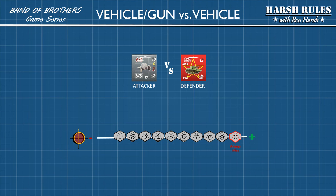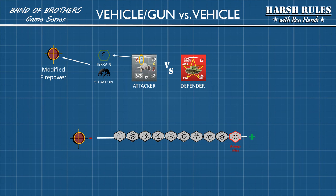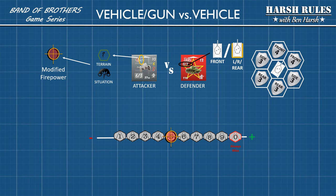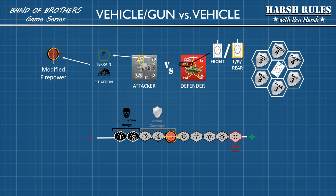Now let's look at vehicles and guns versus other vehicles. First, identify the modified firepower by taking the number after the slash and adding any terrain or situation modifiers — in this instance, we have a 5. Normally anything below this is the elimination range, but first we need to establish armor coverage, which is determined by which hex the shot intersects through to hit the target. If it enters through the front, use the front armor; if through one of the sides, use side armor. In this example the shot came through the side armor, so we count back 3 from the modified firepower — that is the armor coverage. The numbers remaining in the elimination range — in this case 1 and 2 — are the numbers you need to roll to destroy the vehicle.